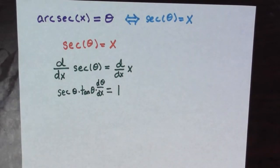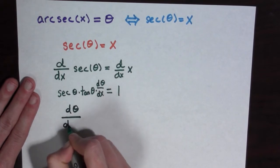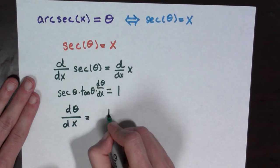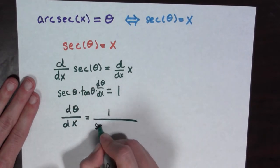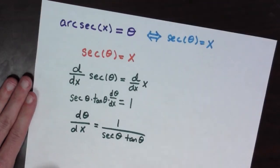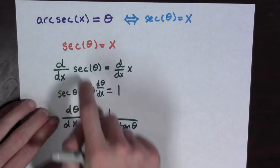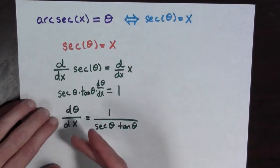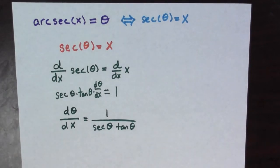So this means that dθ/dx is equal to 1 divided by secant theta times tan theta. Now there's only one problem with this answer. This answer kind of looks like we're done, because we just took the derivative of theta — theta is arc secant of x — and we have 1 over secant theta times tan theta. But the problem is we want to write this entirely in terms of x.